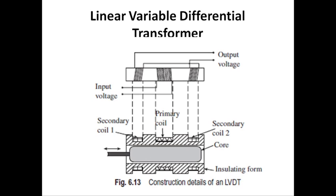The advantages of using LVDT: it can directly convert any mechanical displacement into proportional electrical voltage. It can be overloaded mechanically because the core is completely separated from the remainder of the device. It is highly sensitive and provides good magnification. It is relatively insensitive to temperature changes. It is reusable and very economical.